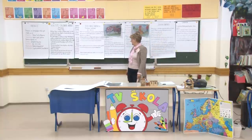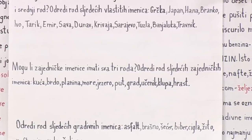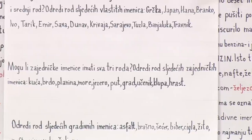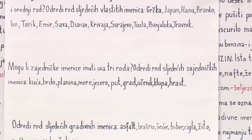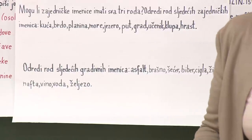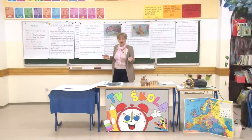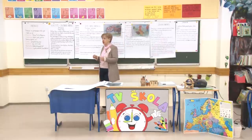Mogu li zajedničke imenice imati sva tri roda? Odredi rod sljedećih zajedničkih imenica: kuća, brdo, planina, more, jezero, prut, grad, učenik, klupa i hrast. Imate još jedan zadatak dolje ispod - to ćete uraditi kao zadaću. Ne mora to biti za jedan dan. Vi ćete i na raspustu ponavljati ovo gradivo i pripremati se za šesti razred. Na YouTube kanalu ćete imati sve ove lekcije koje su bile tokom TV škole, RTV TK - pronađite i ponovite još jednom ovu lekciju.